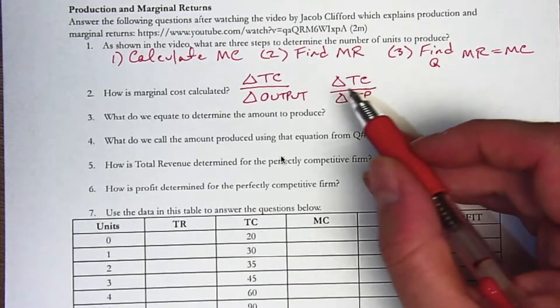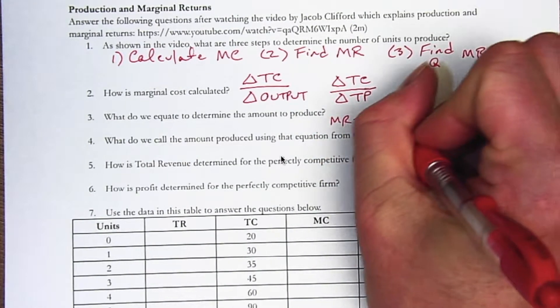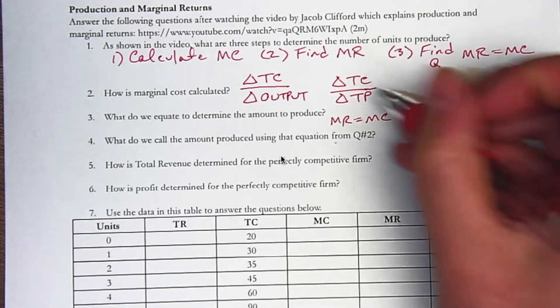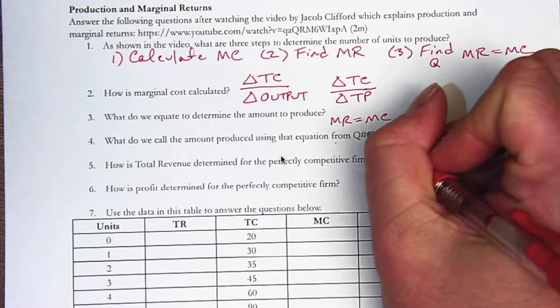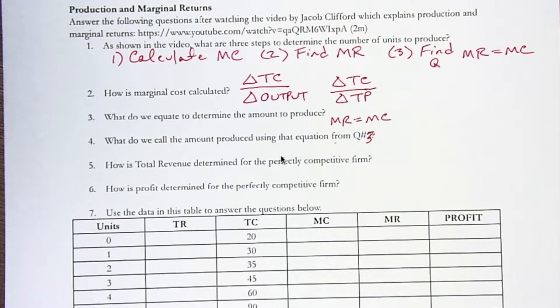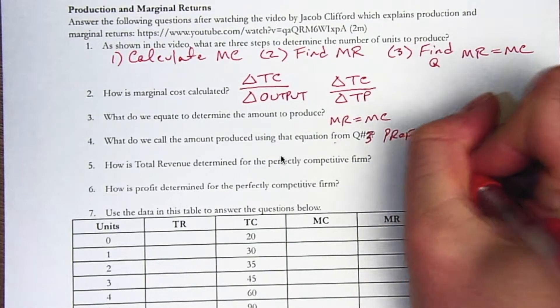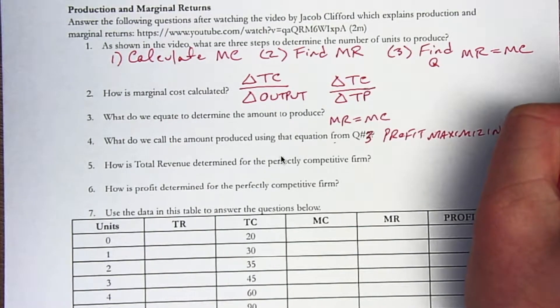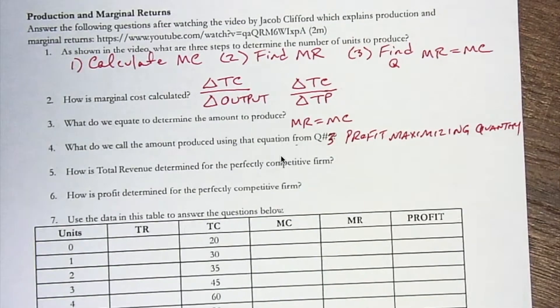And what do we equate to determine the amount to produce? We just said that MR equals MC. What do we call the amount produced using that equation? From question number three, we call that the profit maximizing quantity.